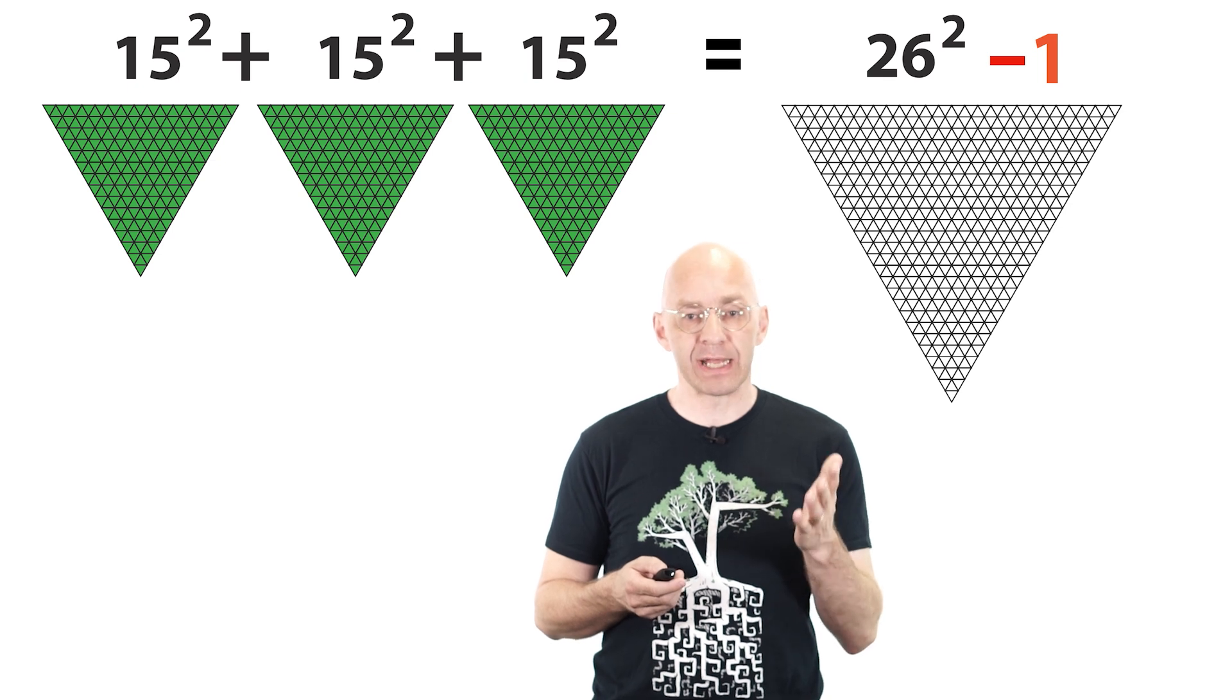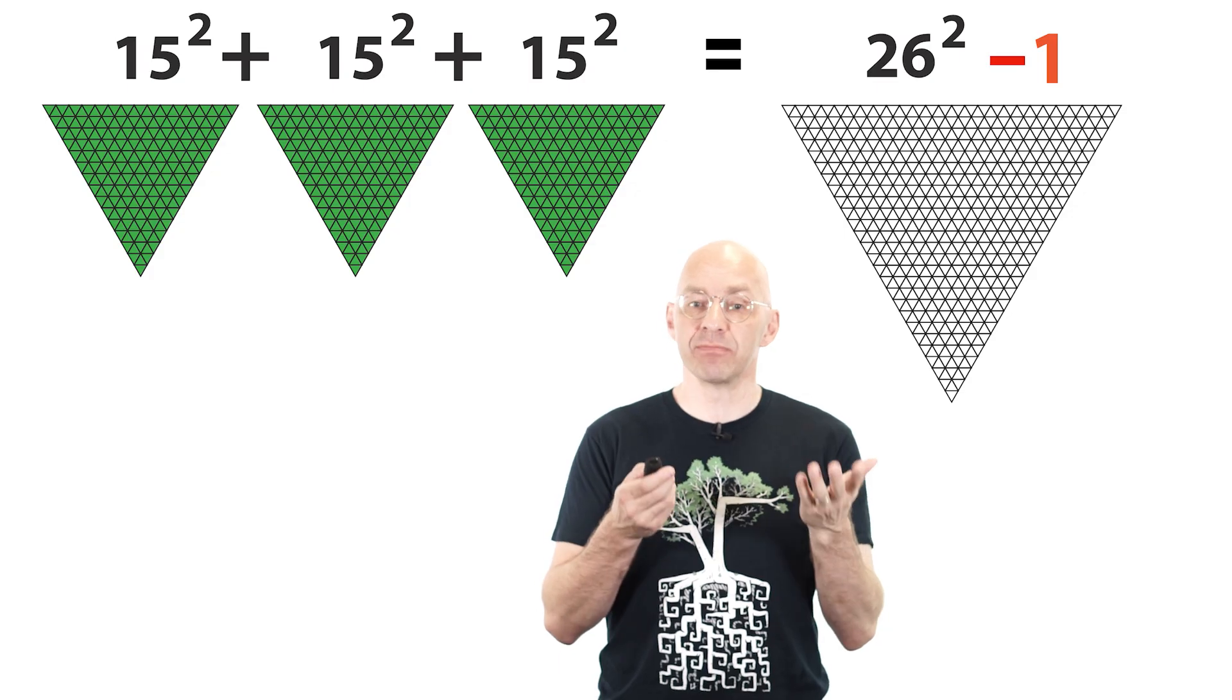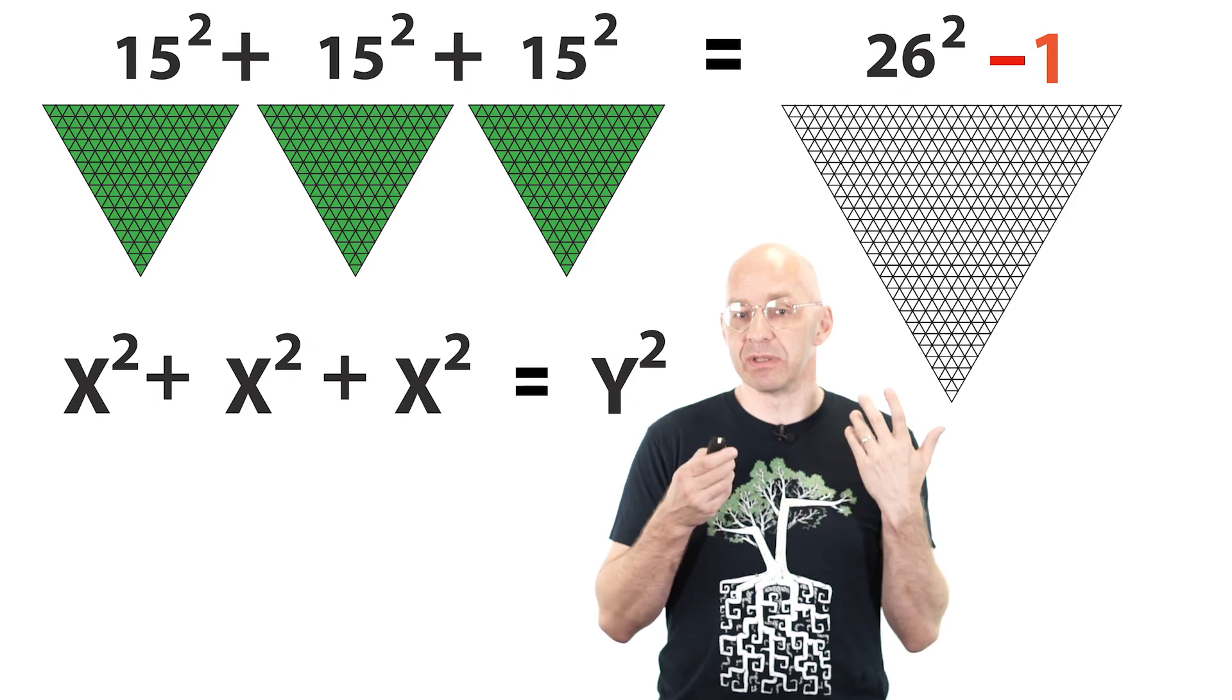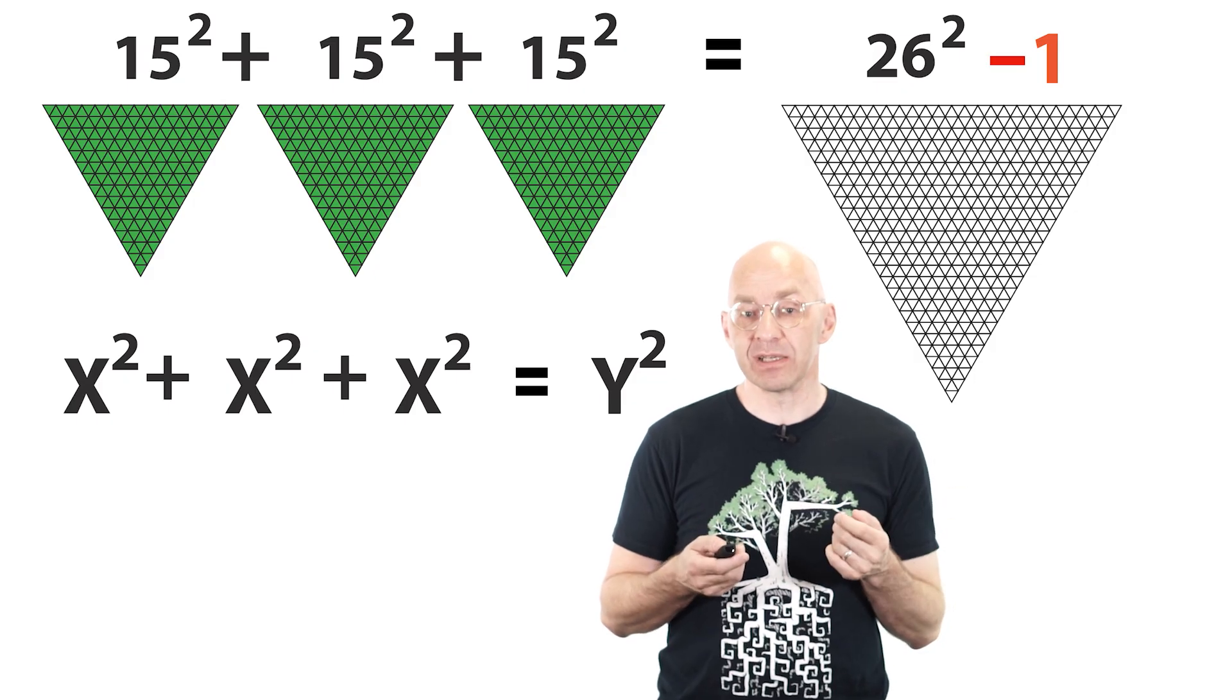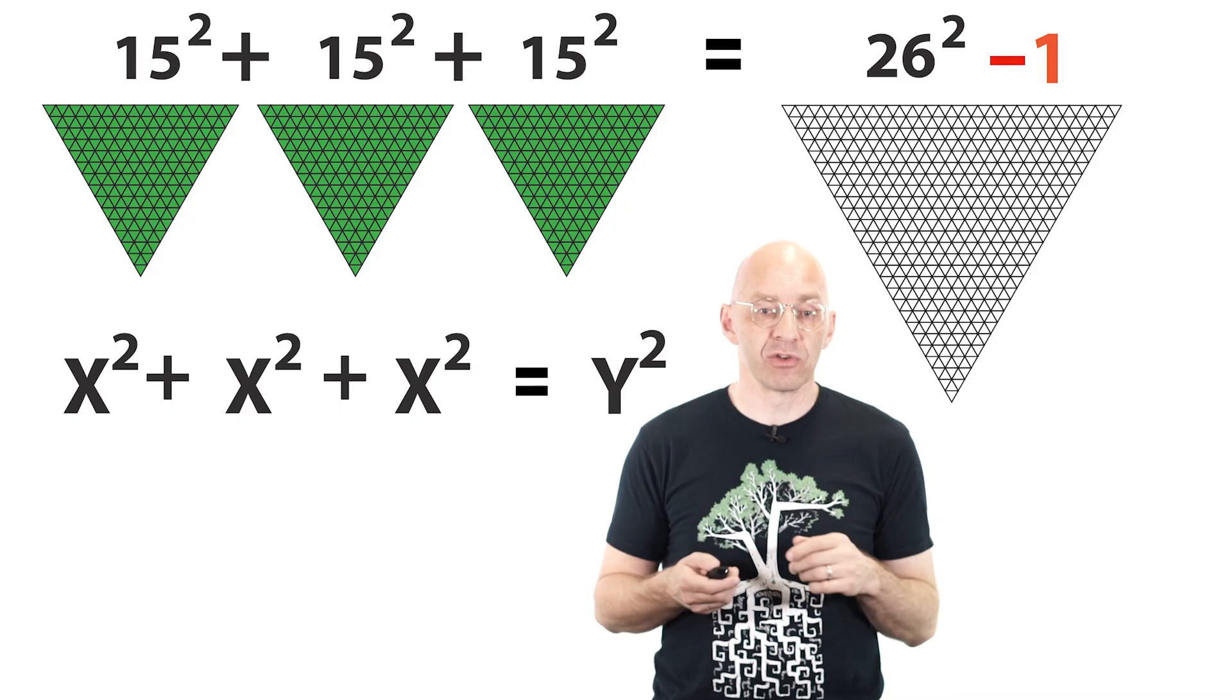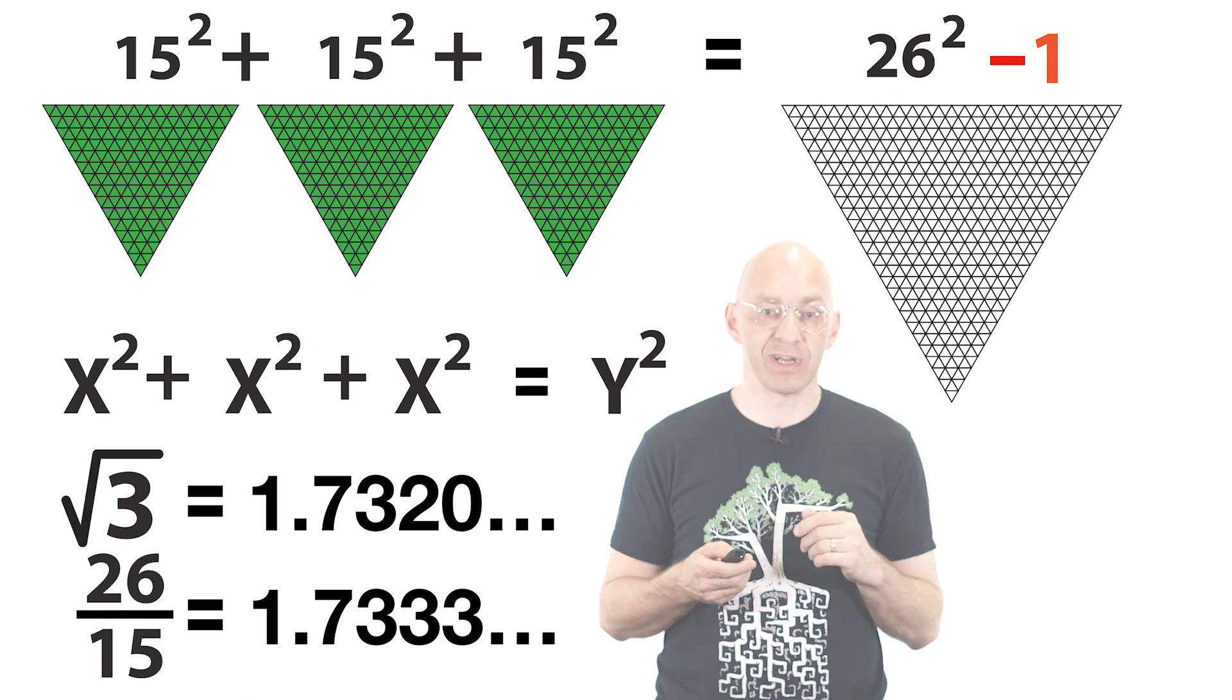And so 15 and 26 form what I want to call a nearest miss solution to the equation x squared plus x squared plus x squared equals y squared, the next best thing to an integer solution. Among other things, this means that 26 over 15 is an extremely good approximation of root 3, sort of the root 3 counterpart of pi's 22 over 7. Have a look. Pretty good, right?